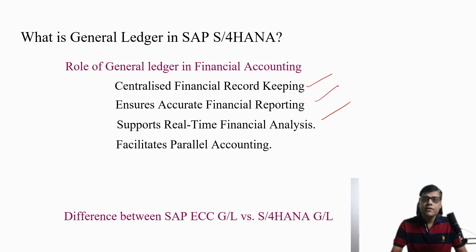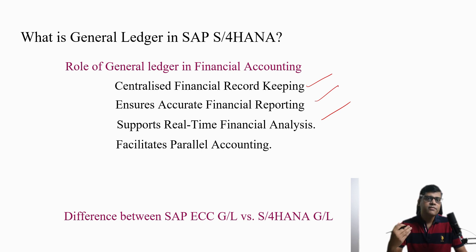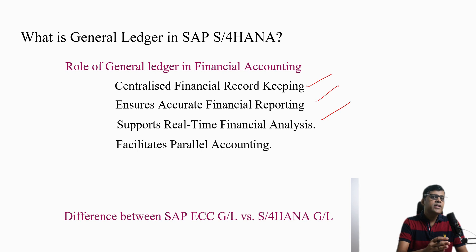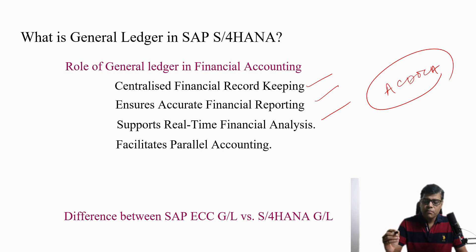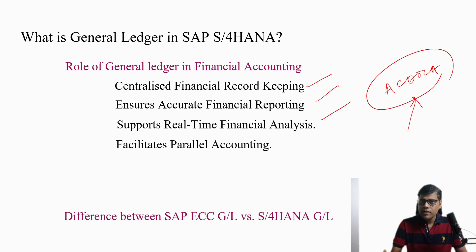The third point is it is also going to help us for real-time financial analysis. Previously we had old technology where financial accounting and management accounting or controlling were separate areas with different sets of information stored in different tables. But now in S4 HANA with the concept of the universal journal, or ACDOCA table, it is a common place where all types of transactions will be recorded — whether related to customer open items, supplier open items, assets, or any GL transactions.